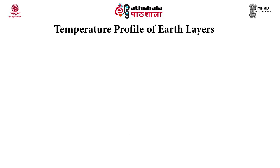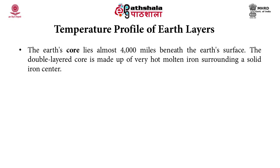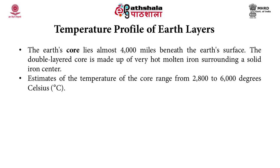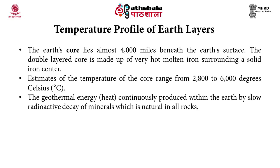The earth is divided into three parts: core, mantle, and crust. The earth's core lies almost 4000 miles beneath the earth's surface. The double-layered core is made up of very hot molten iron surrounding a solid iron center. Estimates of temperature of the core range from 2800 to 6000 degrees Celsius. Geothermal energy is continuously produced within the earth by slow radioactive decay of minerals, which is natural in all rocks.